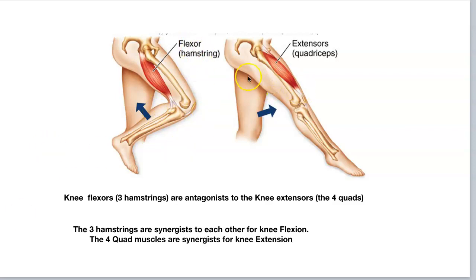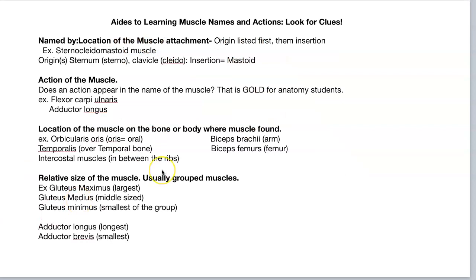Just wanted to give you those terms now because we're going to be putting our muscles into these large groups. Before you start looking at all your muscle names and freaking out, this is a little guide to help you learn muscle names and actions. Look for any clues the muscle name may be giving you. Number one: muscles can be named by the location of their attachments — origin first and then insertion.